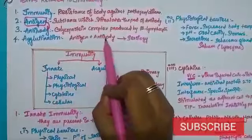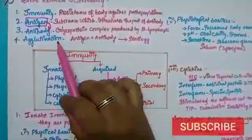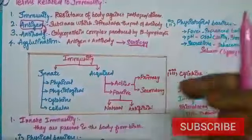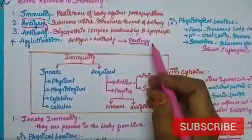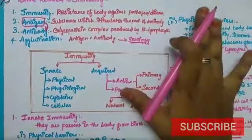Agglutination is antigen plus antibody. The reaction between the antigen and antibody is called agglutination. What is serology? The study of antigen-antibody reaction is serology. These terms are important for board exams.